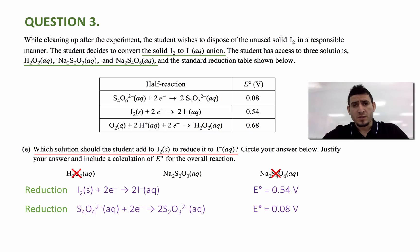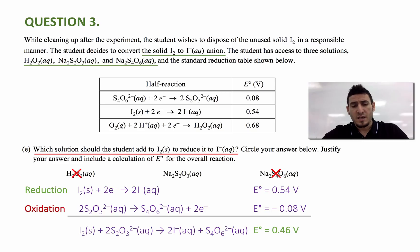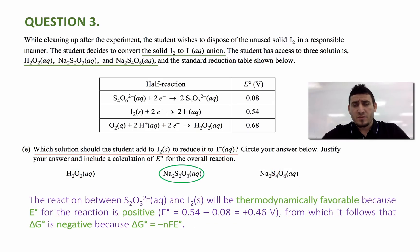By elimination, I can say the answer is Na2S2O3. But let's see why. If I need S2O3 2 minus to be in the reactant side, I can flip the second reduction equation. And now I have the S2O3 2 minus in the reactant side. Summing these two half equations, I can get the overall reaction, where I can see that the cell potential is positive 0.46 volts. So I can say that my answer is Na2S2O3. And this is why, because the reaction between S2O3 2 minus aqueous and I2 solid will be thermodynamically favorable, because E0 for this reaction is going to be positive. A positive E0 means negative delta G0, because the relationship between delta G0 and E0 is delta G0 equals to minus NF E0.